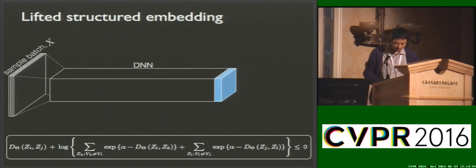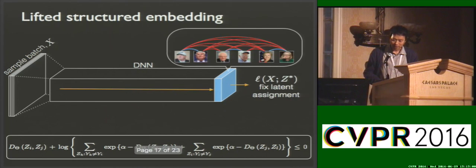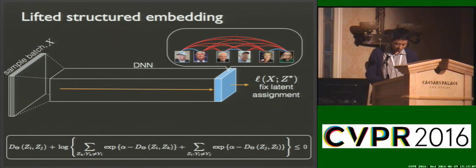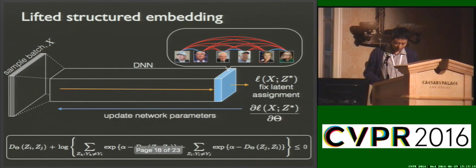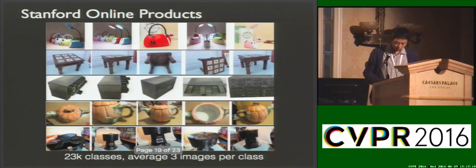For training, we first sample positive pairs of examples in the batch, and let each example find the hardest negative z* within the batch. Then we average the loss over each positive pair. Once we fix the latent assignments — the negative nearest neighbors — we can then update the network parameters.